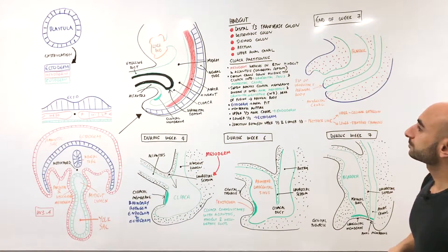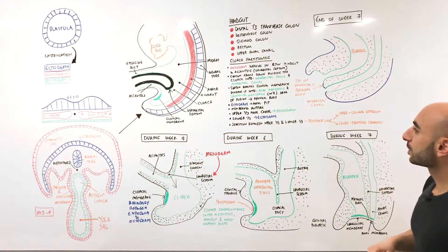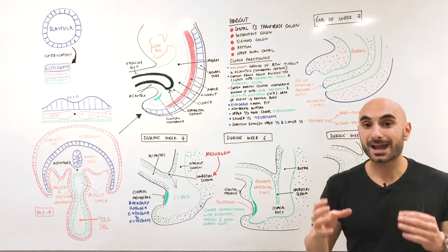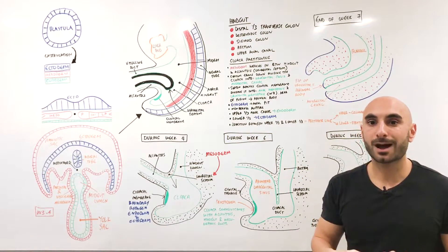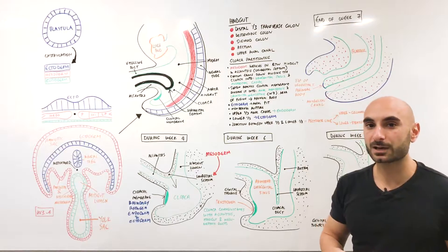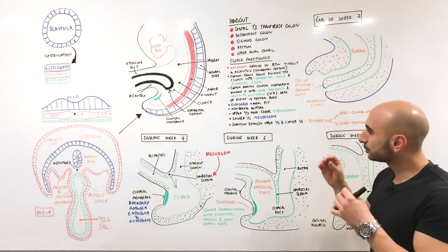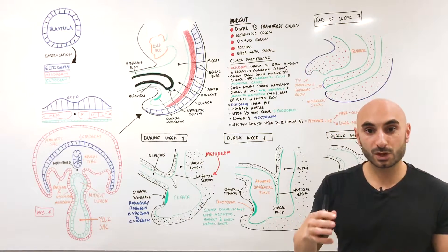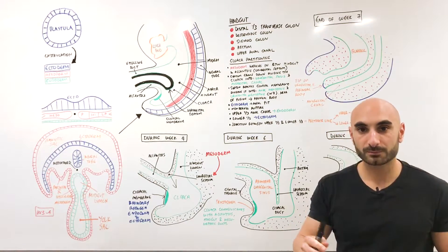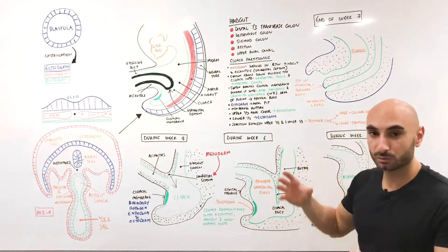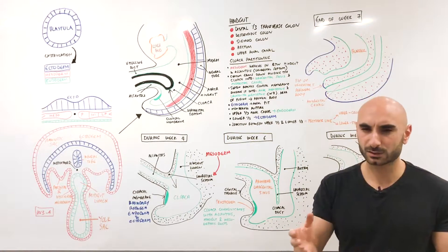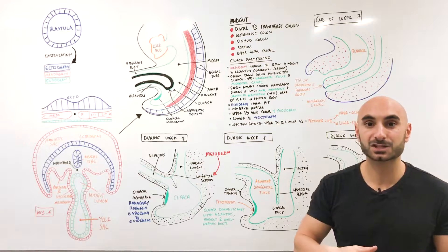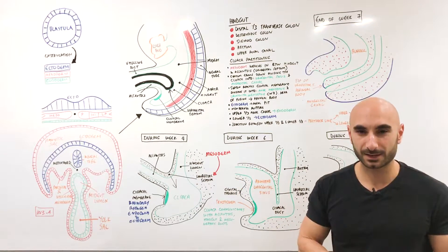Now let's talk about the blood supply. It's very important to know that hindgut is supplied by inferior mesenteric artery. But in terms of the anal canal, since the upper two-thirds is from endoderm, the upper two-thirds will get its blood supply from the superior rectal arteries, which are branches of the inferior mesenteric artery.